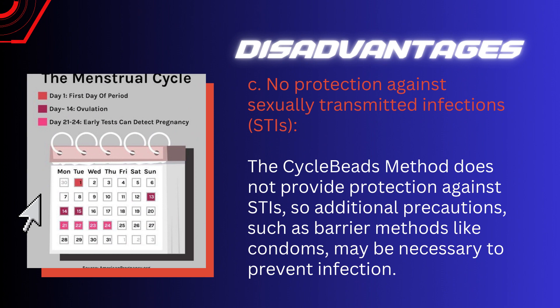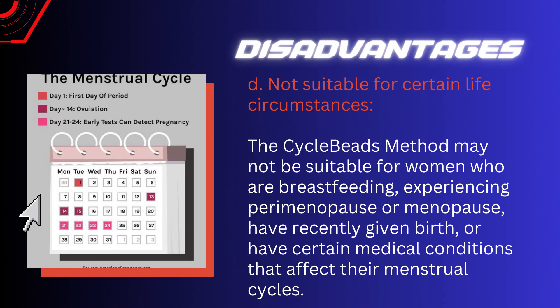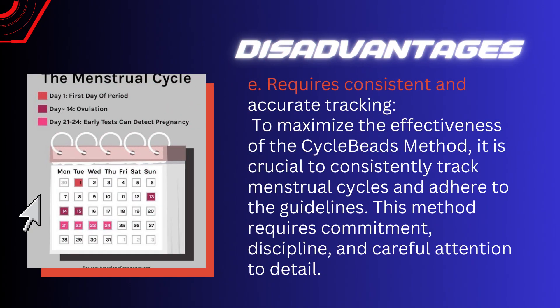Further disadvantages: the cycle beads method may have a higher risk of unintended pregnancy compared to hormonal or device-based methods. It provides no protection against sexually transmitted infections, so additional precautions such as barrier methods like condoms may be necessary. It is also not suitable for certain life circumstances — it may not be appropriate for women who are breastfeeding, experiencing perimenopause or menopause, have recently given birth, or have medical conditions affecting their menstrual cycles.